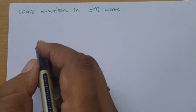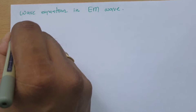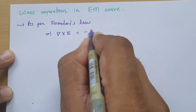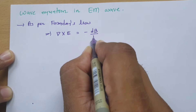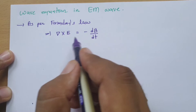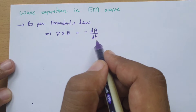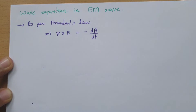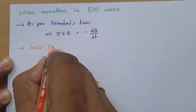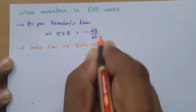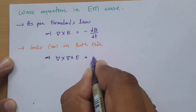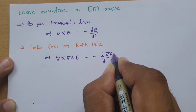As per Faraday's law, we can write the point form of that equation as del cross E, which equals minus dB/dt. That explains the generation of EMF because of a change in magnetic flux. So del cross E equals minus dB/dt. Now, if we do the curl operation on both sides, we get: del cross del cross E equals minus d/dt of del cross B.